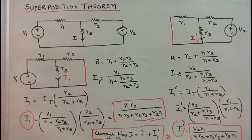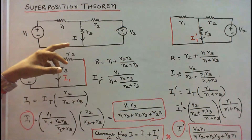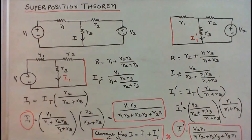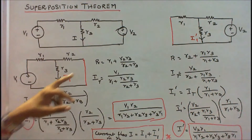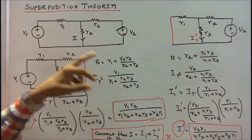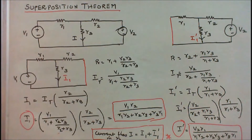So the current flow through resistance R3 equals I1 plus I1', and this sum should equal the total current I. Now we will work out one problem.